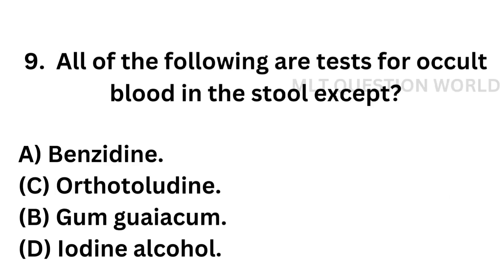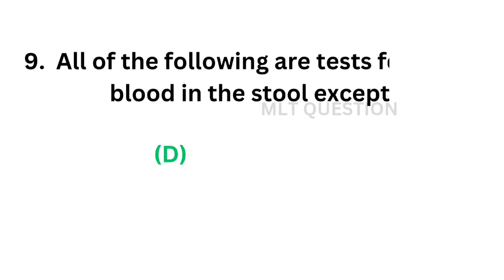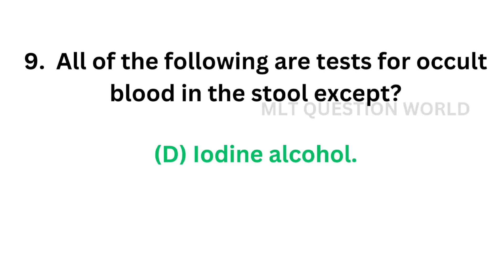Question number nine: All of the following are tests for occult blood in stool, except — Option A: Benzidine, Option B: Orthotolidine, Option C: Gum guaiac, Option D: Iodine alcohol. The correct answer is Option D — iodine alcohol. Iodine alcohol is not used for occult blood in stool.